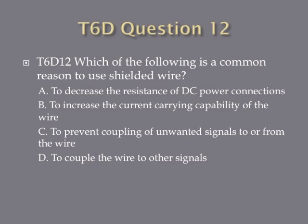Question 12. Which of the following is a common reason to use shielded wire? A. To decrease the resistance of DC power connections, B. To increase the current carrying capacity of the wire, C. To prevent coupling of unwanted signals to or from the wire, or D. To couple the wire to other signals.